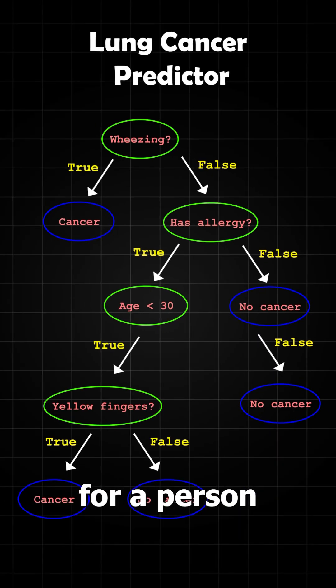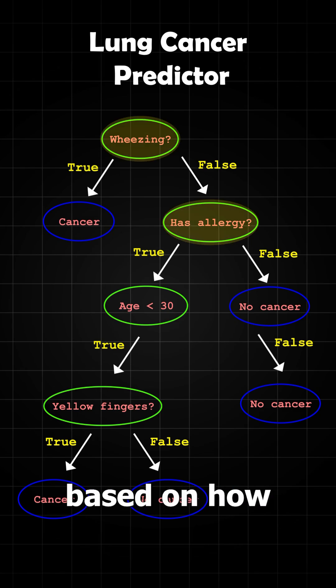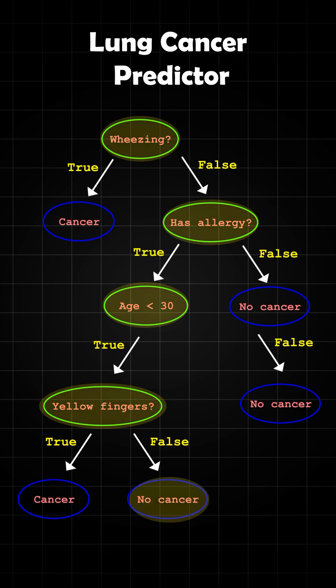To make a prediction for a person, you start at the root node and move down based on how the data matches the condition. When you reach a leaf node, that's your prediction.